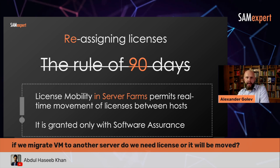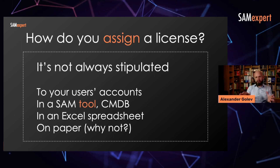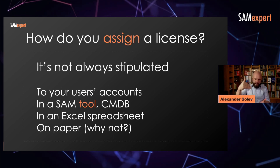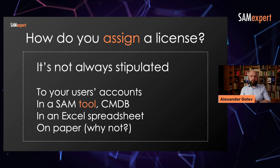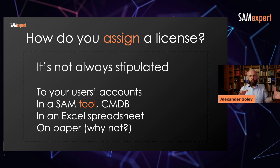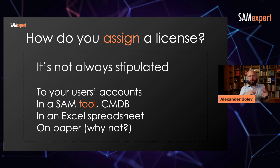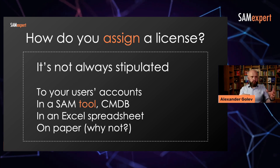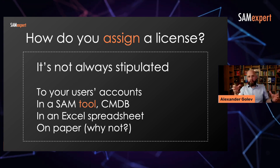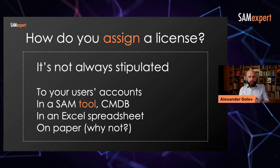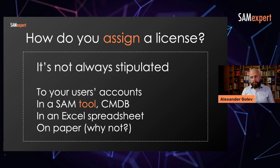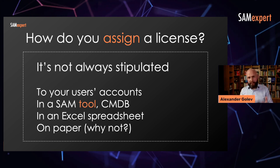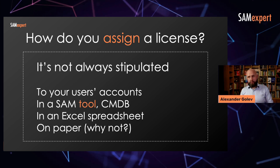If the product has License Mobility in Server Farms, how do you assign a license? That's not always stipulated. For online services it's simple — for Office 365, you assign licenses to an account in your admin console. When it's not Office 365, it's not really stipulated — it's up to you. You can use a software asset management tool like Snow, Flexera, Spira, or Sampro, or a CMDB where you assign licenses. That's one way. You just need to formally assign the license to something. It could be an Excel spreadsheet — or in small companies, licenses are assigned on paper. Microsoft does not stipulate how your register of licenses should be maintained.